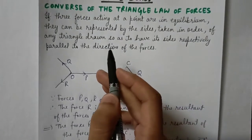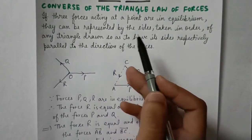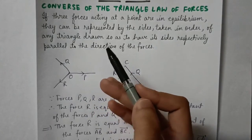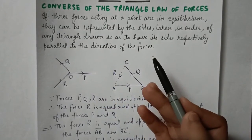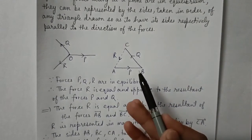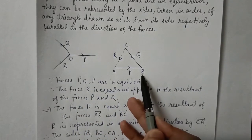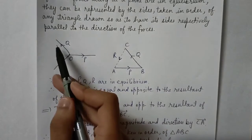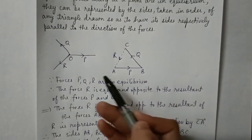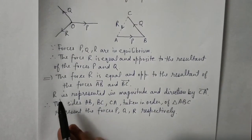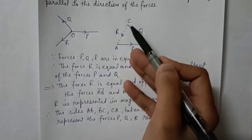Let us re-read the statement. We needed to prove that if three forces acting at a point are in equilibrium, they can be represented by the sides of any triangle drawn so as to have its sides respectively parallel to the direction of the forces. In triangle ABC, the P force is parallel to side AB, the Q force is parallel to side BC, and we have proved that R is represented in magnitude and direction by vector CA, so the R force is also parallel to vector CA.